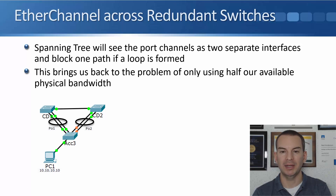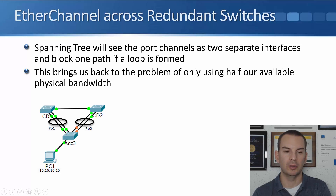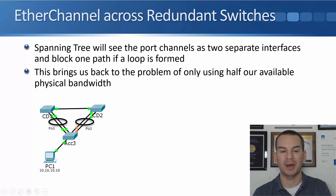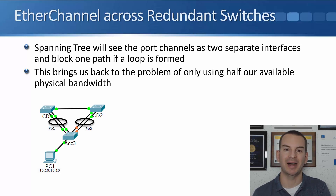The problem with this is that spanning tree will see those separate port channels as two separate interfaces and will block one path if a loop is formed. In our example, CD1 is the root bridge so the port channel from Access 3 to that is going to be forwarding, but the port channel going up to CD2 would form a potential loop, so spanning tree is going to block that port channel. So I've got four physical interfaces configured as uplinks here but only two of them are forwarding — only half of my possible bandwidth.